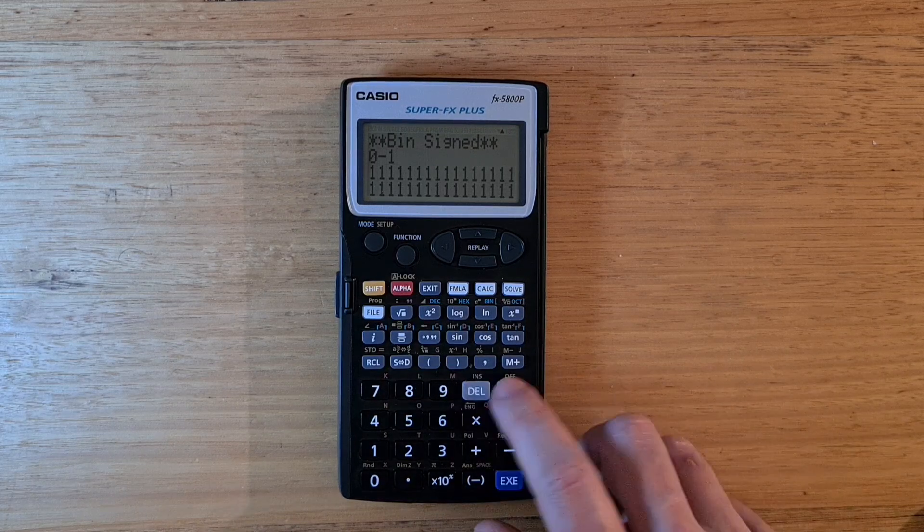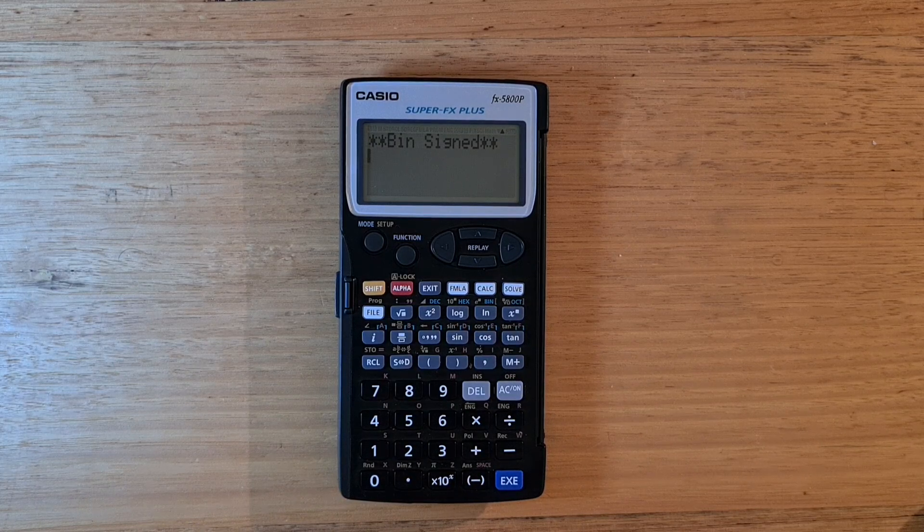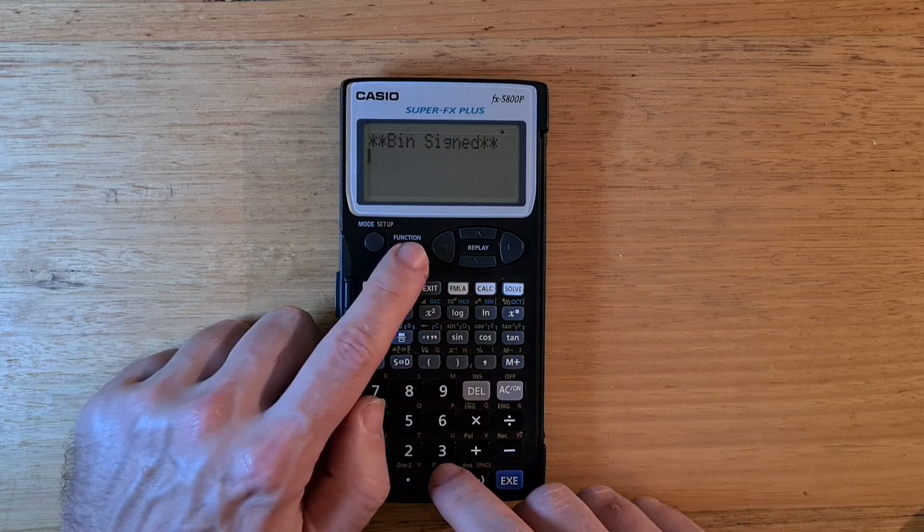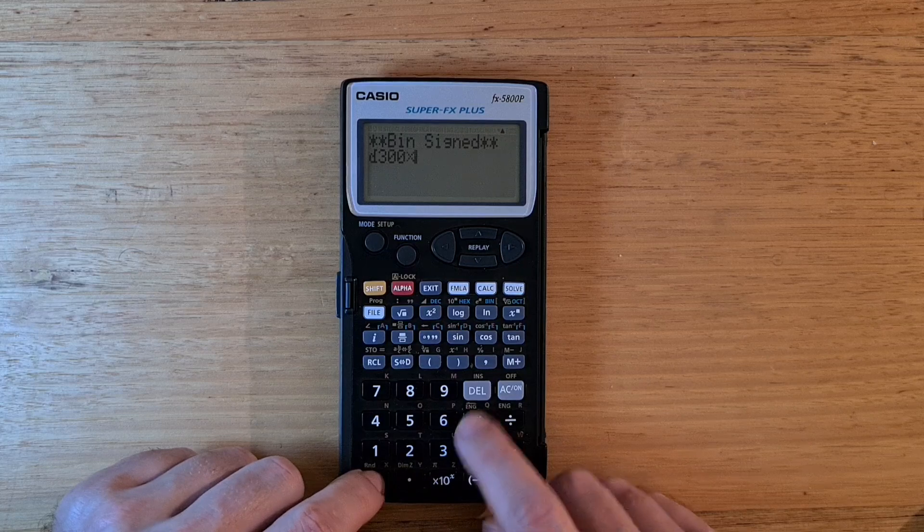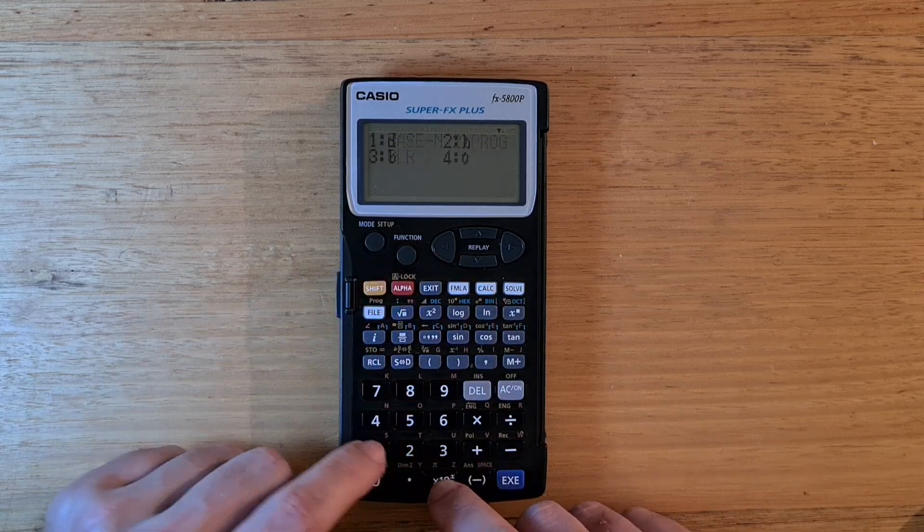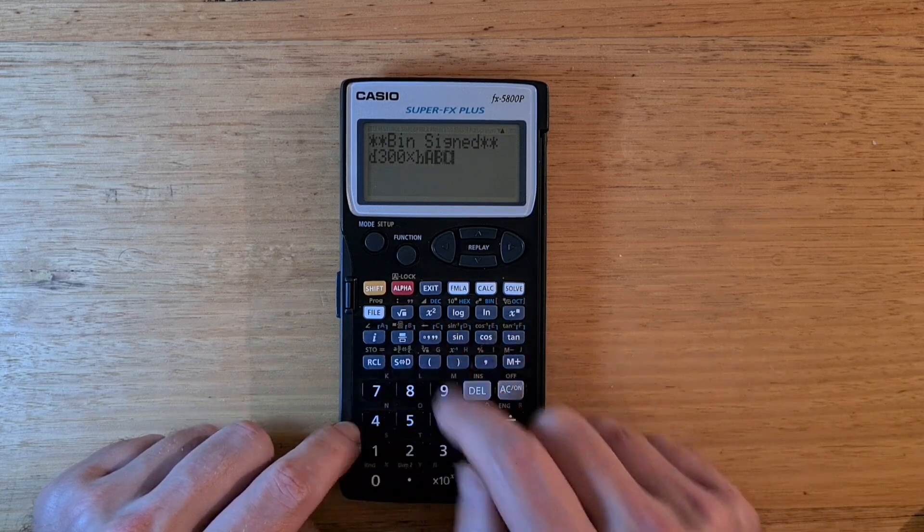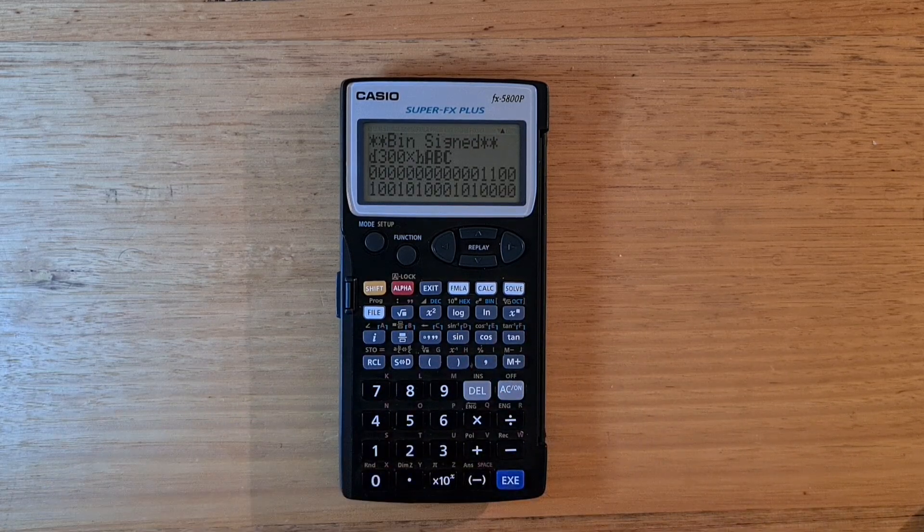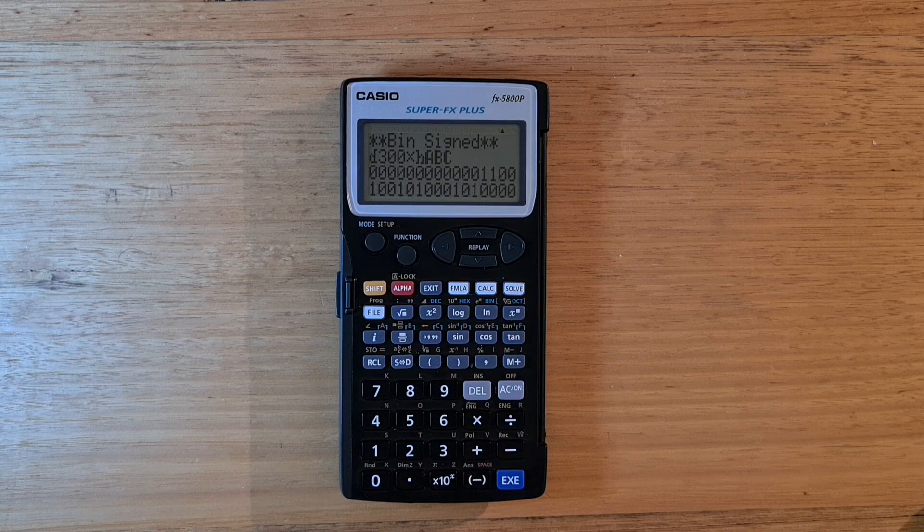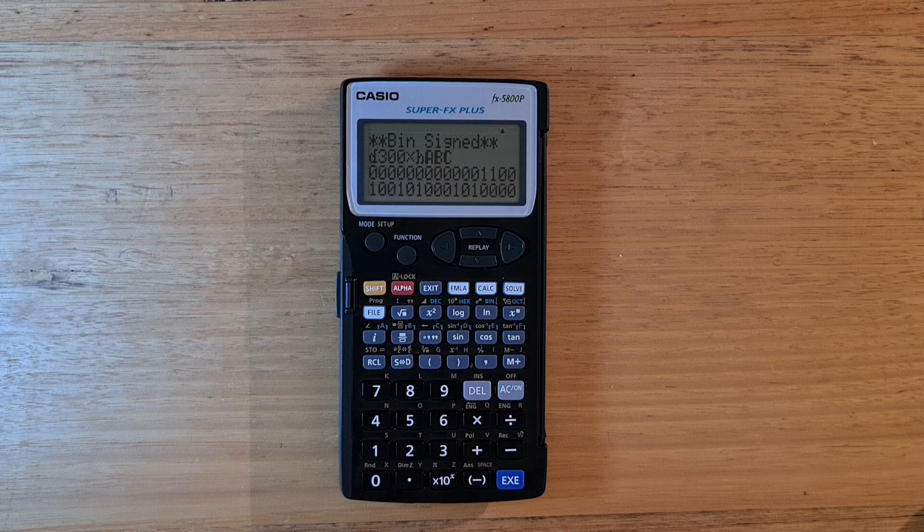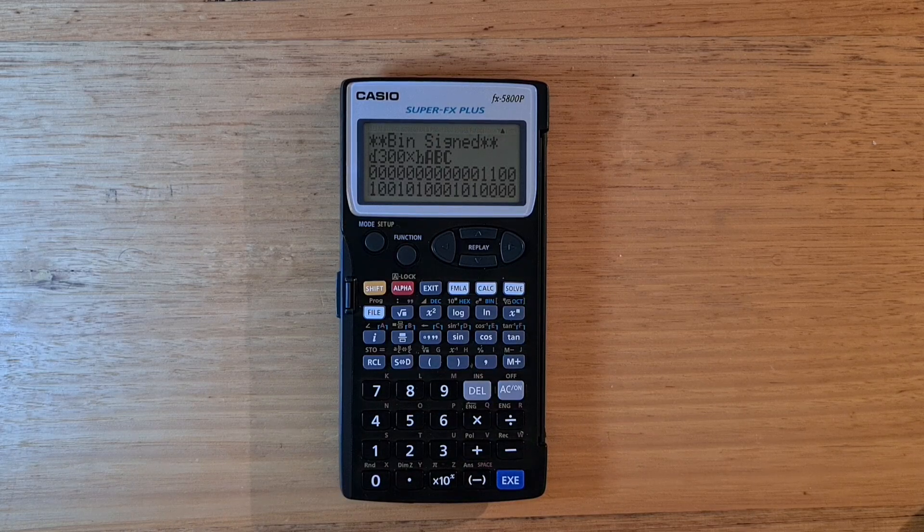And so you can see that the results presented in 32 bits in one's complement. And you can mix bases in base n mode. So for example, we could multiply a decimal number by a hex number and see the results in binary. There's also logical bitwise operations, but you can't change the word size or use 2's complement.